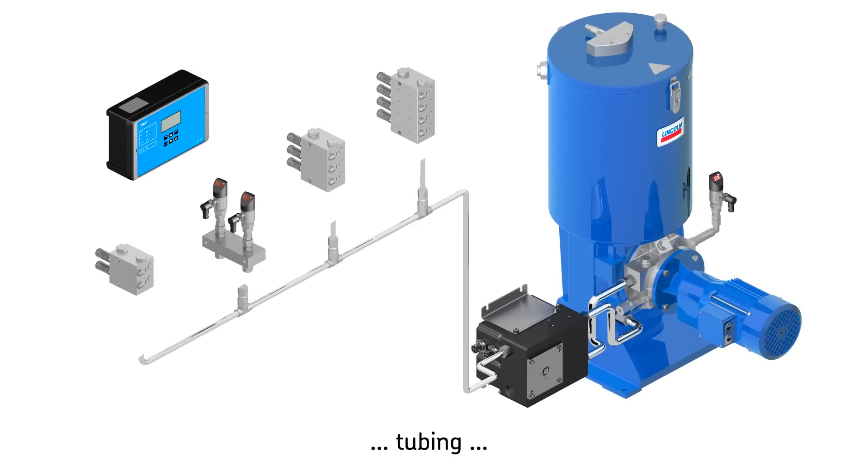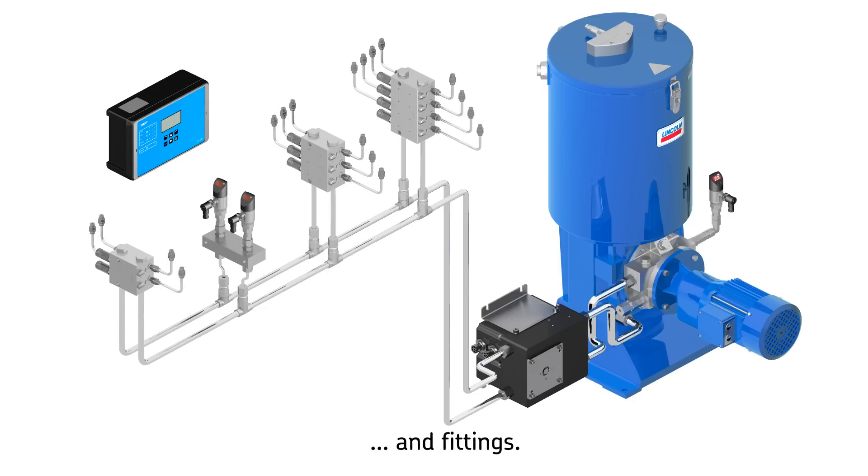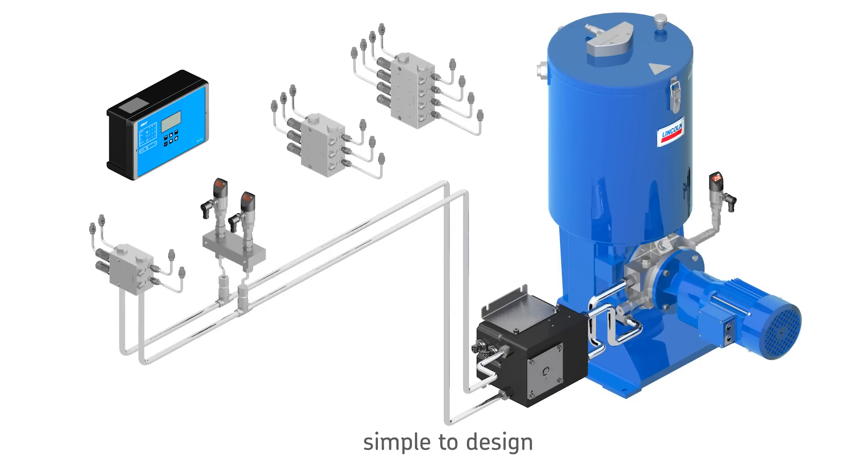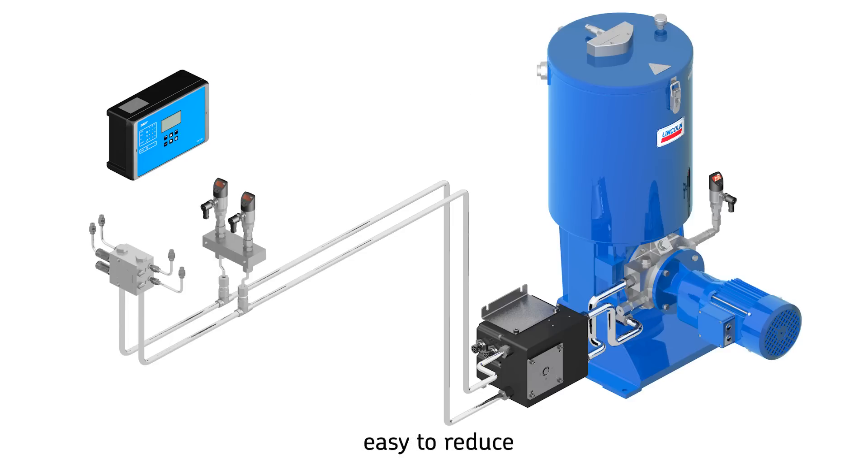Tubing and fittings. These flexible systems are simple to design and can be reduced easily by removing metering devices or extended by installing additional metering devices.